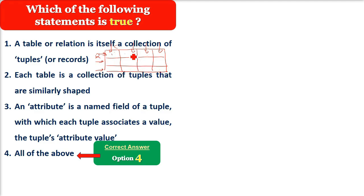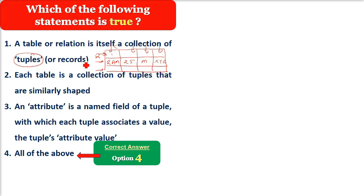For example، ایک رام ہے — اس کا نام لکھ دیا، age ہو گئی 25، gender ہو گیا male، address ہو گیا xyz. تو آپ دیکھیں گے یہ جو میں نے ایک row میں content لکھا ہے، اسی کو ہم tuple کہتے ہیں، اسی کو ہم record کہتے ہیں۔